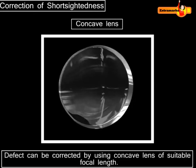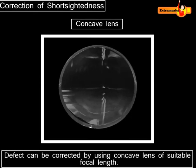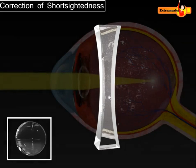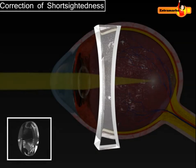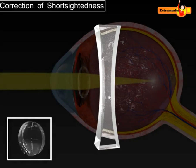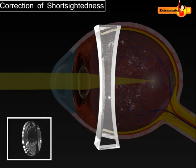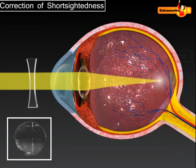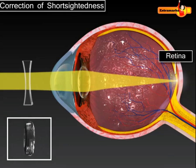In such a defective eye, the image of a distant object is formed in front of the retina and not at the retina. This defect can be corrected by using a concave lens. A concave lens of appropriate power or focal length is able to bring the image of the object at the retina itself.